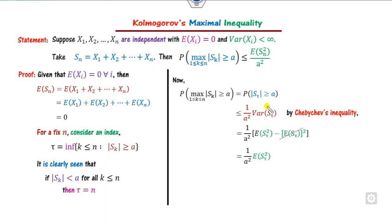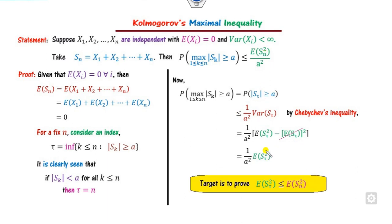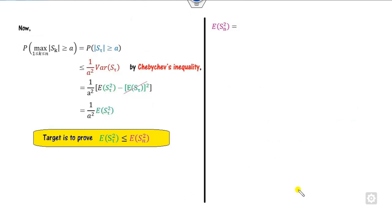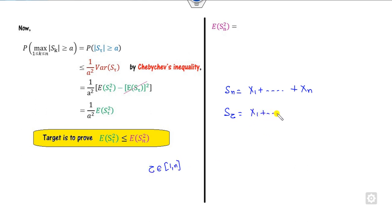Now we compare the two inequalities. The target is to prove that E[S_τ²] ≤ E[S_n²]. We note that S_n = X_1 + ... + X_n and S_τ = X_1 + ... + X_τ. The remaining part is X_{τ+1} + ... + X_n, which equals S_n - S_τ. So we can write S_n = S_τ + (S_n - S_τ).